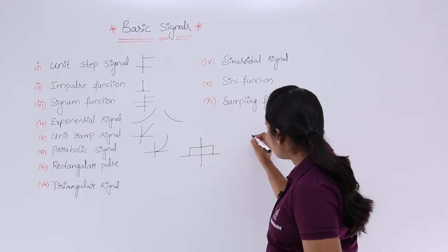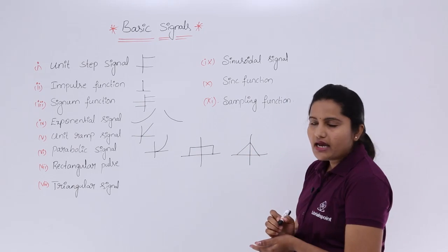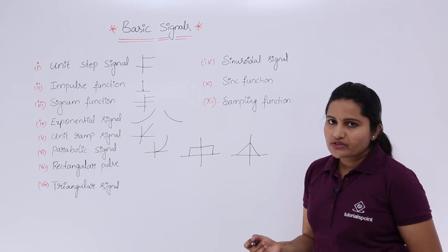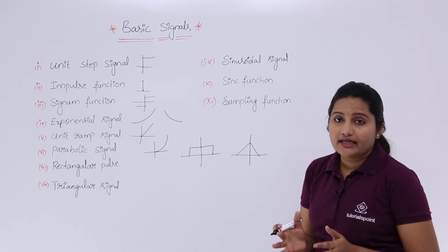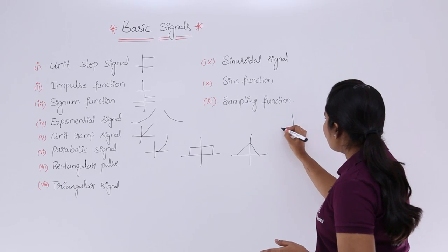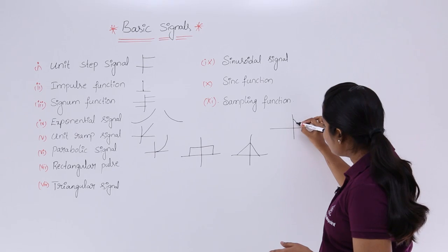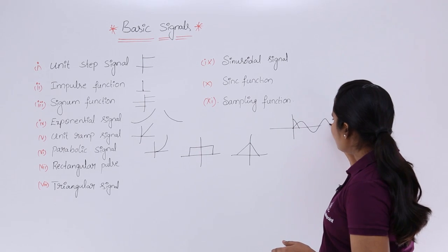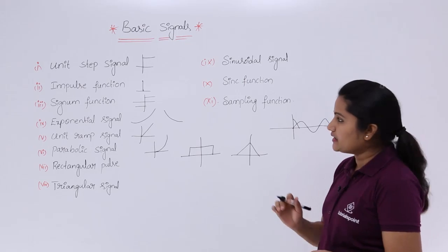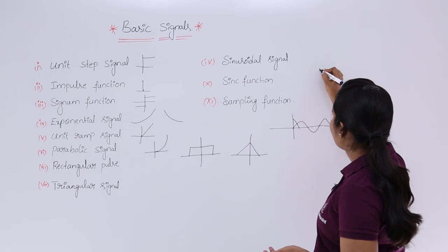The triangular signal, as the name indicates, is in the shape of a triangle. The sinusoidal signal is familiar because throughout electronics we work with sinusoidal signals — it may be either a cosine signal starting from 90 degrees or a sine signal starting from 0 degrees. The sinc and sampling functions also have a characteristic shape.